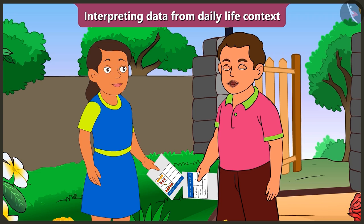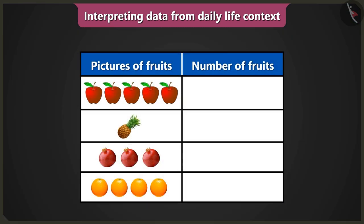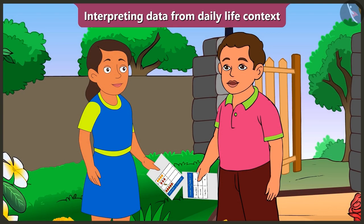Now show me the second table which mummy has given to you. Here it is. There are only pictures of fruits in this table. The number of fruits are not written. So what will you do now? I will go to the kitchen now and count the number of fruits and come back. Stop. You do not have to go anywhere.